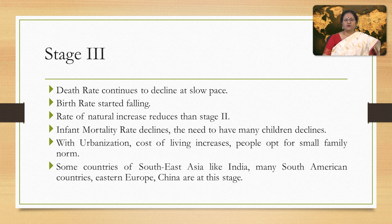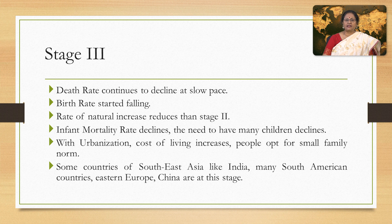The third stage is also known as the stage of declining birth rate and low death rate. In this stage, death rate continues to decline at a slow pace and birth rate starts to fall. The rate of natural increase is lower than in stage 2. Infant mortality rate declines and the need to have many children also declines. With urbanization, the cost of living increases, and people opt for a small family norm to maintain a high standard of living. Increased mechanization reduces the need for workers. Some countries of southeast Asia like India, many south American countries, eastern Europe, and China are at this stage.